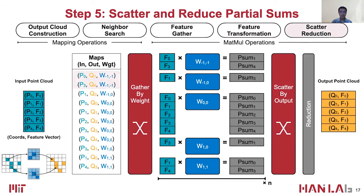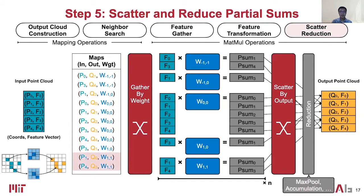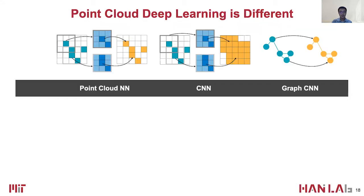Finally, the partial sums are scattered and aggregated to the corresponding output location. For example, the partial sums of weight W1 are scattered to output point one and point four separately. The aggregation can be max pool and accumulation, etc.